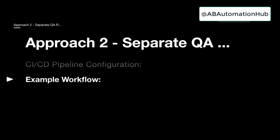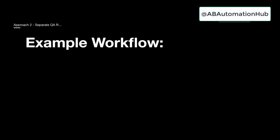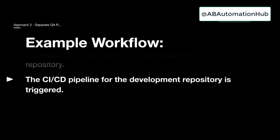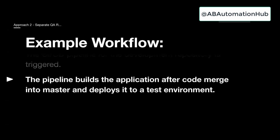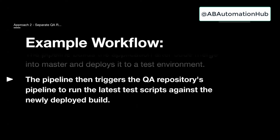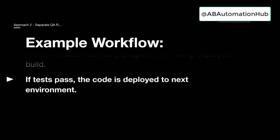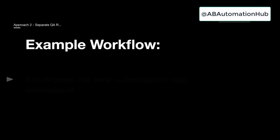In the example workflow: the developer commits the code to the development repository. The CI/CD pipeline for the dev is triggered. The pipeline builds the application. Once the developer merges the code, the pipeline is triggered — it merges code into master, starts deployment to that environment, then triggers the test automation script. If test cases pass, the code can be deployed to the next environment. You can also perform manual testing on that environment before proceeding to deploy to the higher environment.